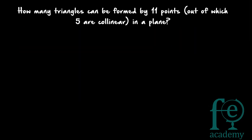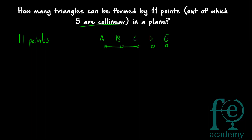Next question: how many triangles can be formed by 11 points, out of which 5 are collinear, in a plane? In total there are 11 points; by selecting 3 points each you can form a triangle. But 5 points are collinear — from those 5 collinear points, even if you select 3, you will not get a triangle. Collinear means they lie on the same line, so selecting points A, B, C from them gives only a straight line, not a triangle.